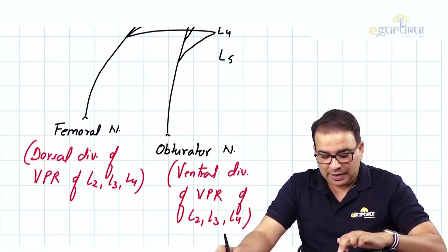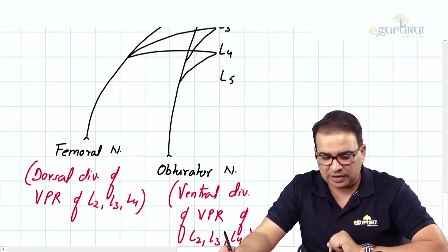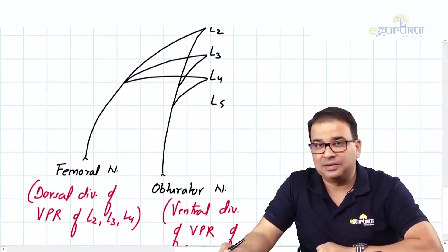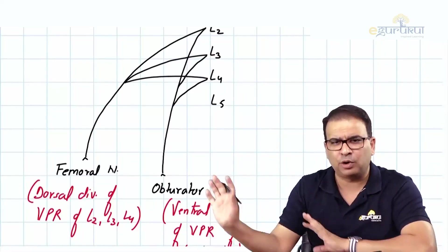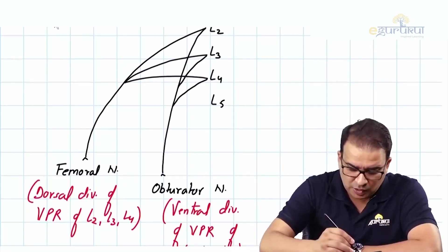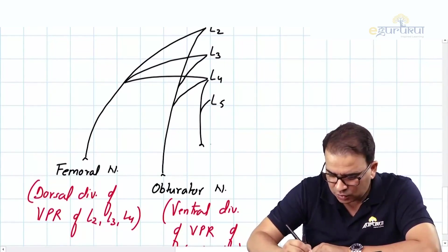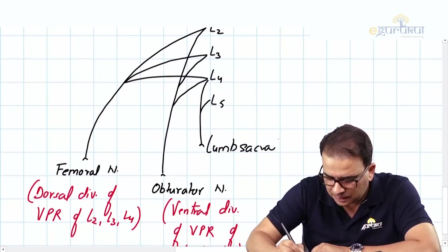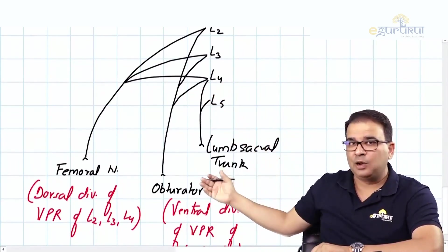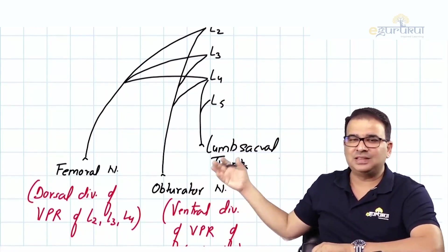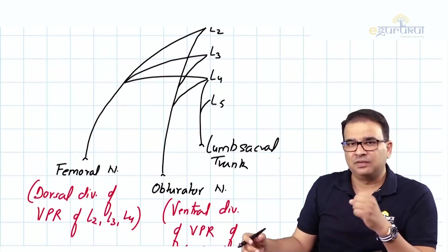Apart from the obturator nerve, there may be an accessory obturator nerve coming from L2 and L3 — not always present. From L4 and L5, a trunk called the lumbosacral trunk emerges. We call it the lumbosacral trunk because it represents a contribution from the lumbar region that goes down to join the sacral nerves. We'll revisit this when we discuss the sacral plexus and the sciatic nerve.